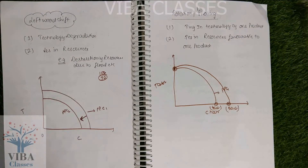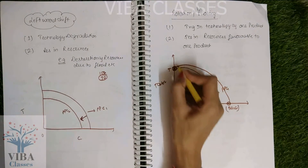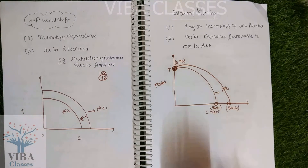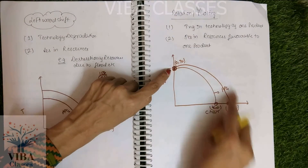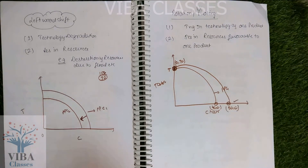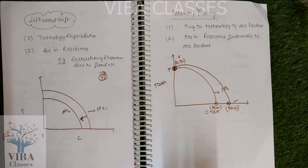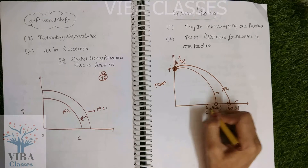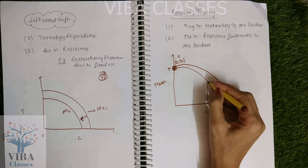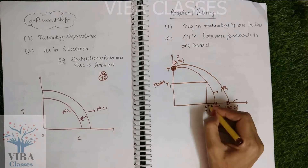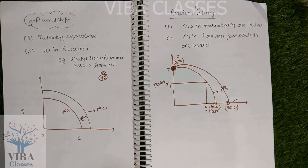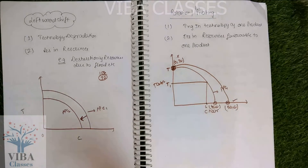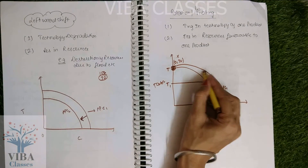Rotation occurs because the technology was favorable for chairs. If you only produce tables, you get the same combination as before. But if you make a chair and table combination, you can get more. If you want the same number of chairs, since the technology is chair-favorable, less wood is used for chairs, and the saved wood can be used to make more tables. So the PPC rotates — the table-axis intercept stays the same at 0,70, but the chair-axis intercept increases, giving an outward rotation on the chair side.